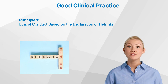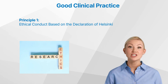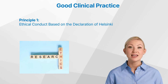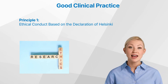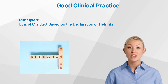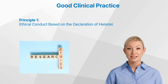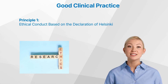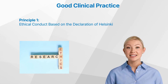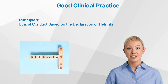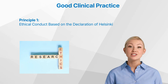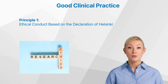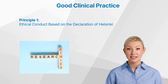This involves transparent communication about the nature, purpose and risks of the trial, as well as respect for the autonomy of participants. Additionally, ethical principles demand that trials are scientifically justified and the potential benefits outweigh the risks to participants.